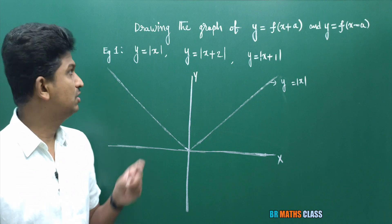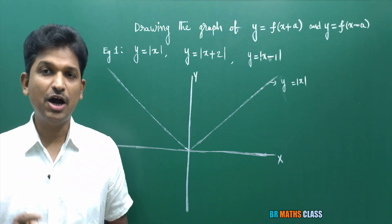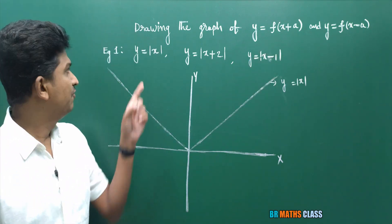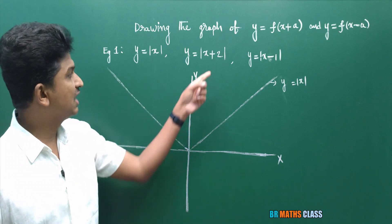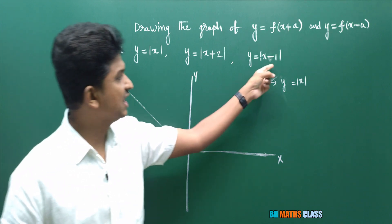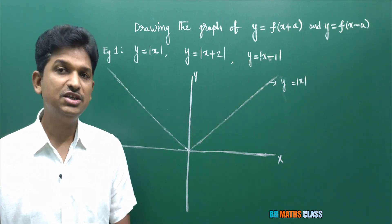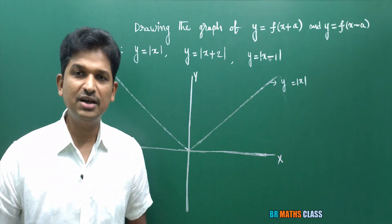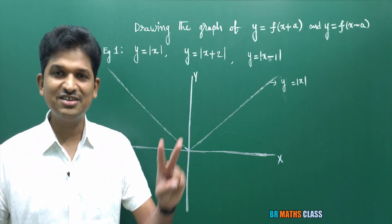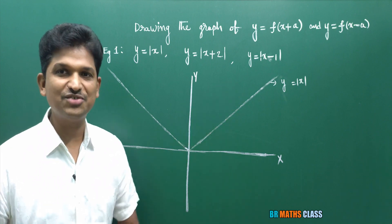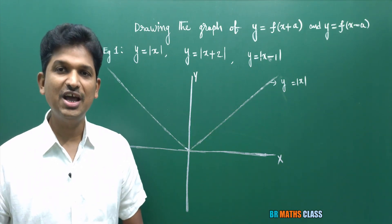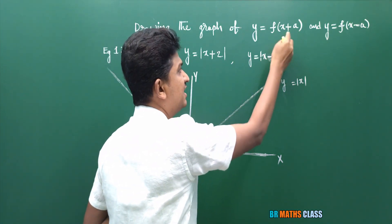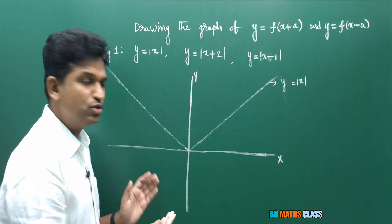Observe this example — it is a very good example to understand how to draw the graph when the function is of the form f(x+a) and f(x-a). When you know the graph of modulus of x, how to draw the graph of modulus of x+2 and modulus of x-1? You need to know the graph of the modulus function. The modulus function symbol is like a V shape. When you know the graph of modulus of x, how to draw the graph of modulus of x+2? For f(x+a), when plus a is there, shift the graph f(x) through a units towards the left.